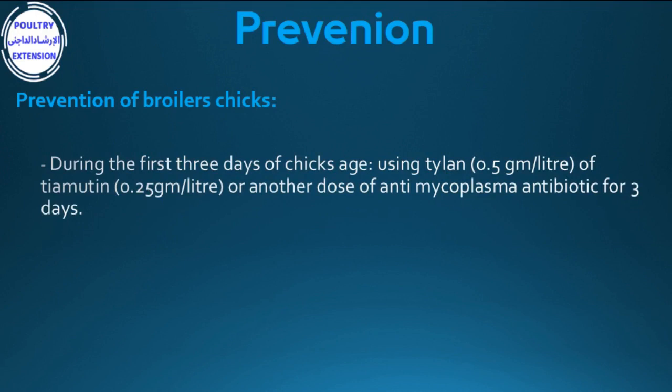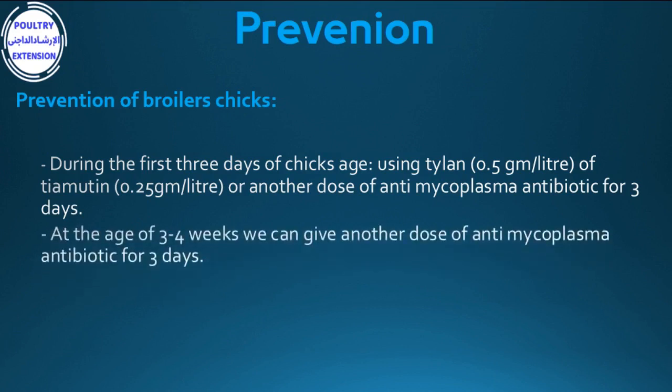Using tylosin at 0.5 g per liter water or another anti-mycoplasma antibiotic for three days. At 3 to 4 weeks of age, give another dose of anti-mycoplasma antibiotics for three days.